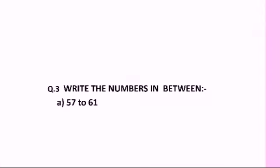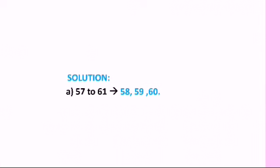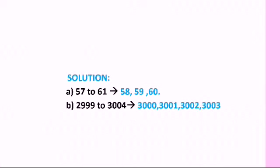Now let us move on to the third question: write the numbers in between. Part A is between 57 and 61, and part B is between 2999 and 3004. 'Between' means you do not write the end numbers. From 57 to 61, after 57 comes 58, then 59, then 60, then 61 — but we do not write the end numbers. So the answer is 58, 59, and 60. All consecutive numbers in between are written.